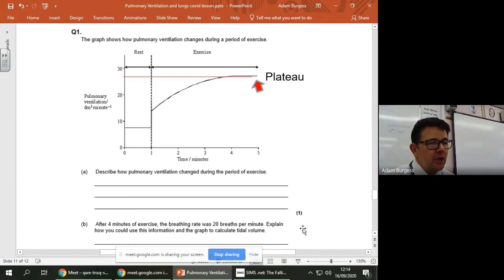Question 1B, that is what we call an applied question. So you're applying your knowledge of pulmonary ventilation, breathing, and tidal volume to use the graph to work out the answer. Okay, and biology, they like those kinds of questions. So you might be given graphs you've never seen before, and you've got to work out what's happening.